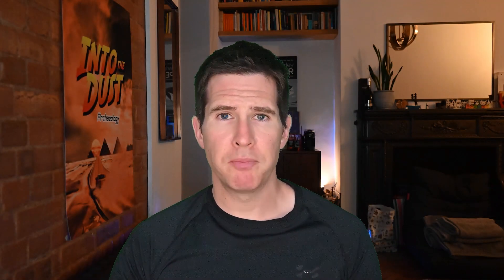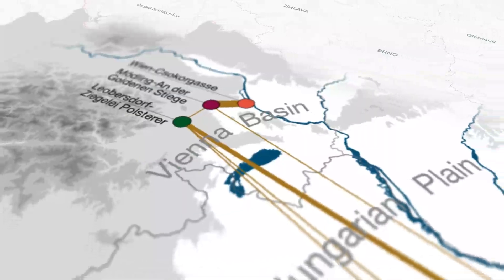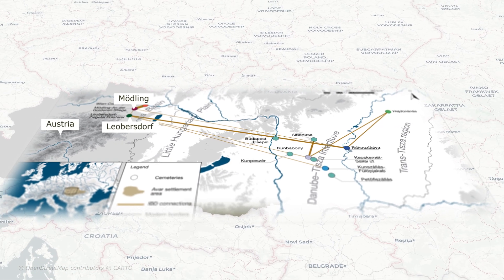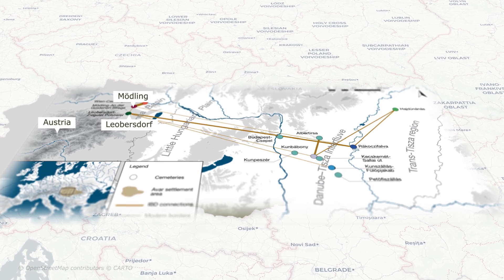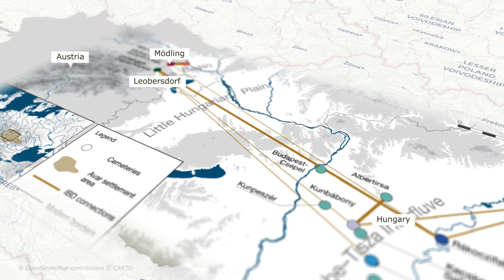Jumping ahead 600 years to the 7th and 8th century, the next paper focused on a few cemeteries — I'll go with the two easiest to pronounce: Lobesdorf and Mödling, among some others. These two cemeteries are located about 25 kilometers or 15 miles apart in what is today Austria. But as you know from our discussions on the Avars, the Avar heartland was in Hungary, so these sites are kind of on the periphery of that.